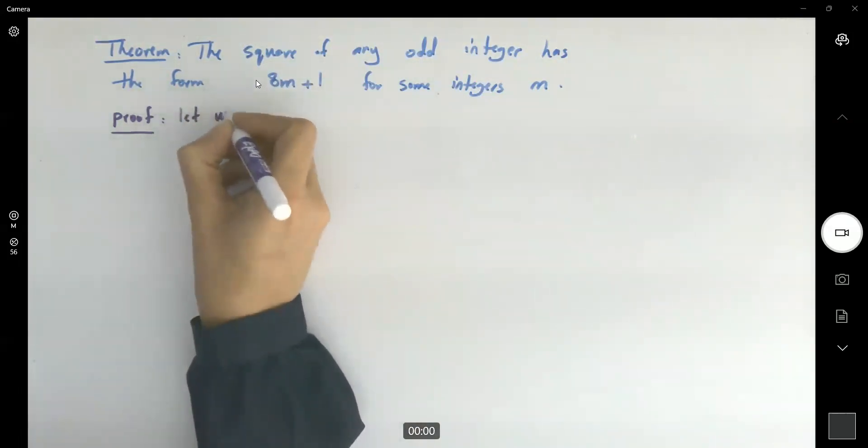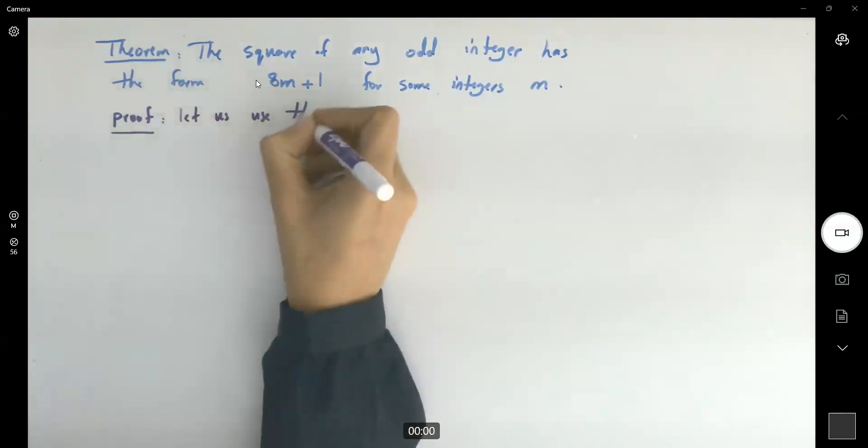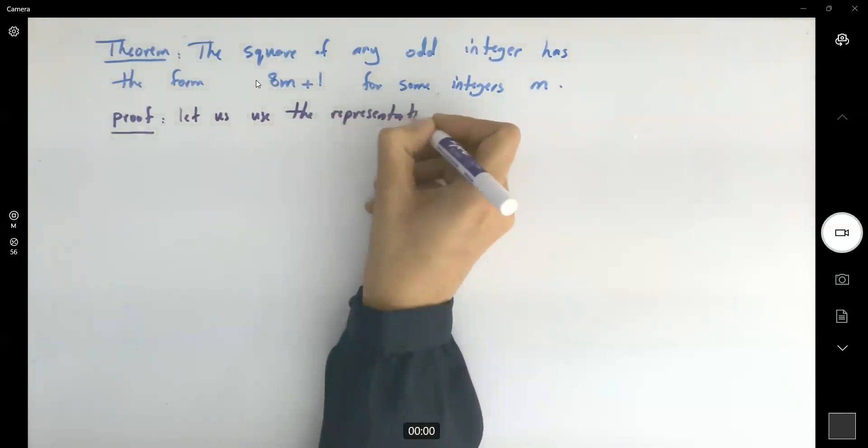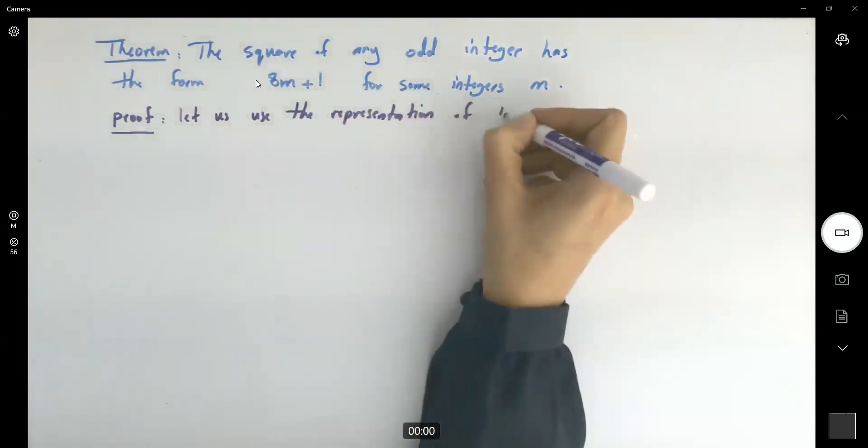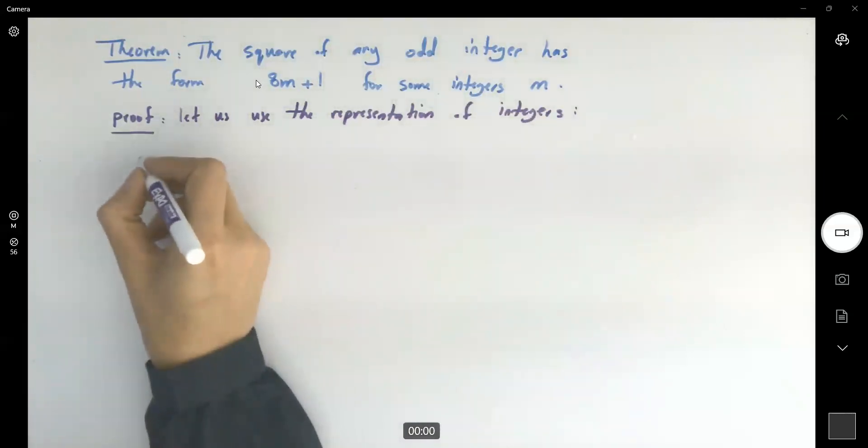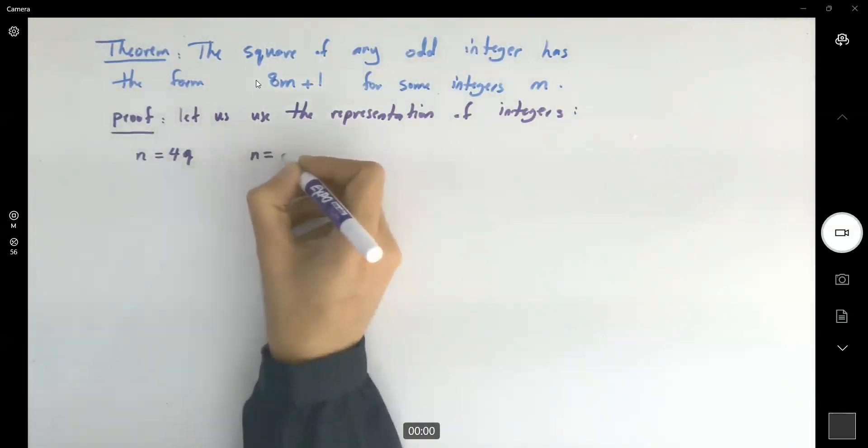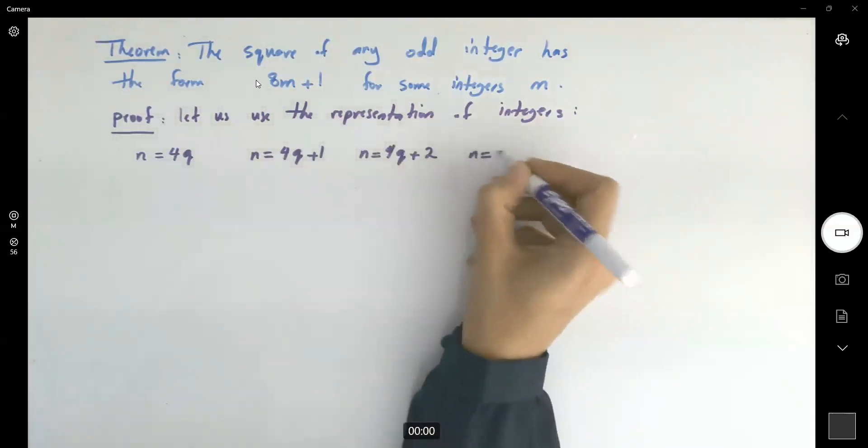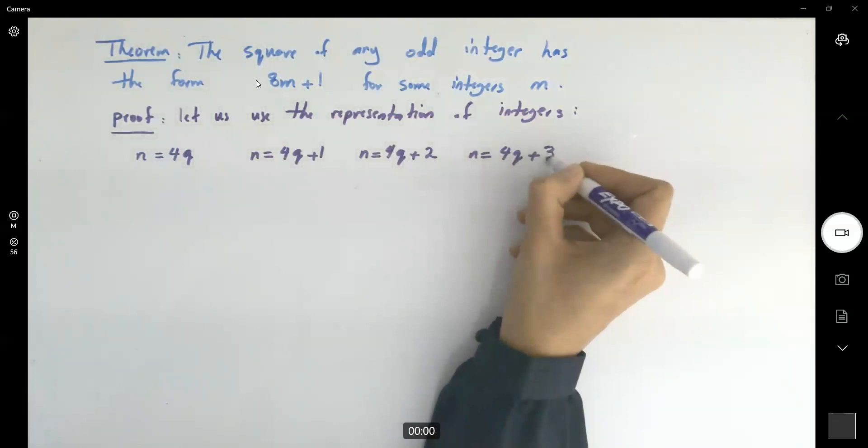So let us use the representation of integers as follows: n is equal to 4q, n equal to 4q plus 1, n is 4q plus 2, n is 4q plus 3. This is what we learned.